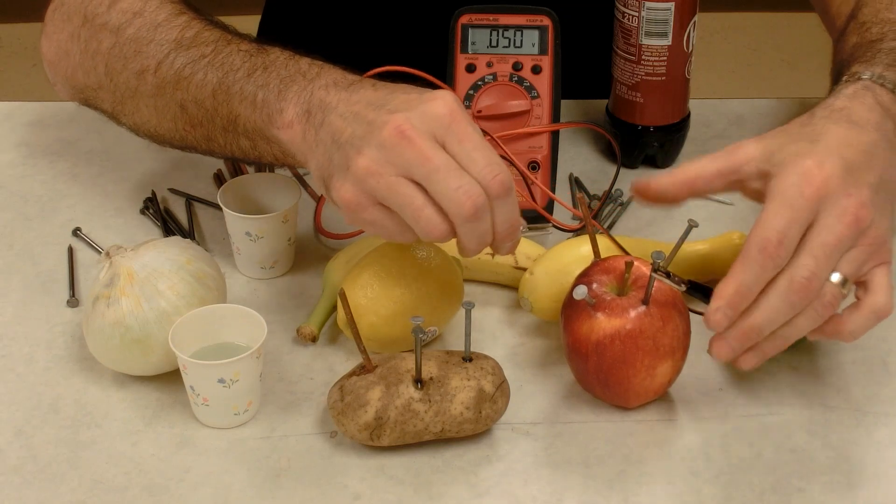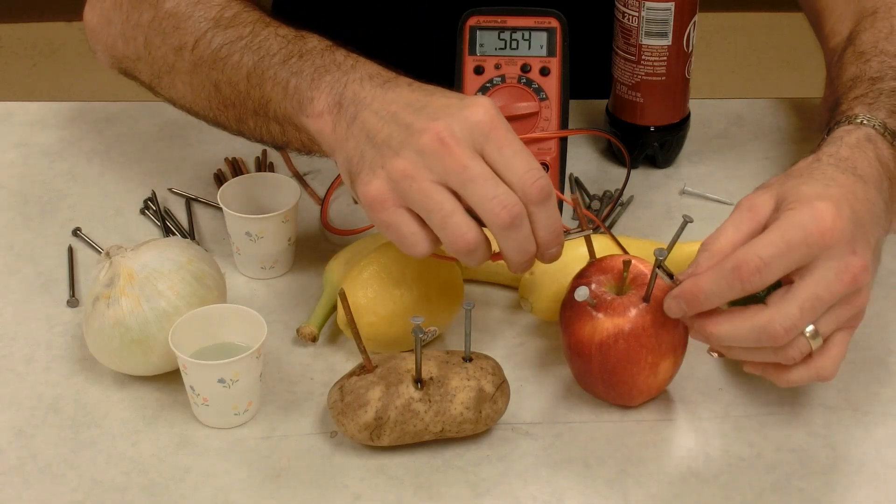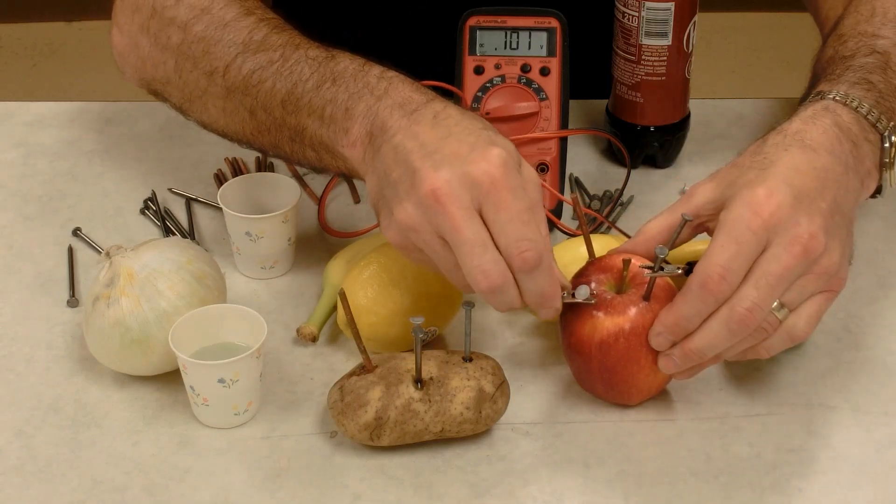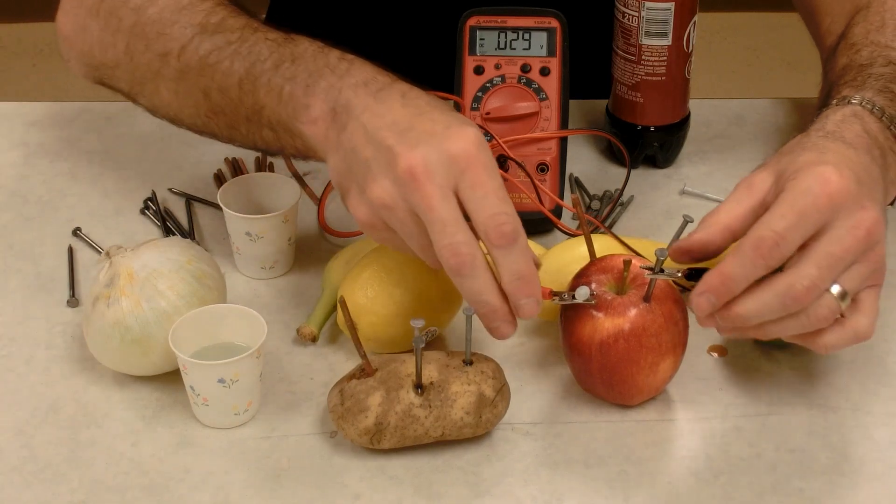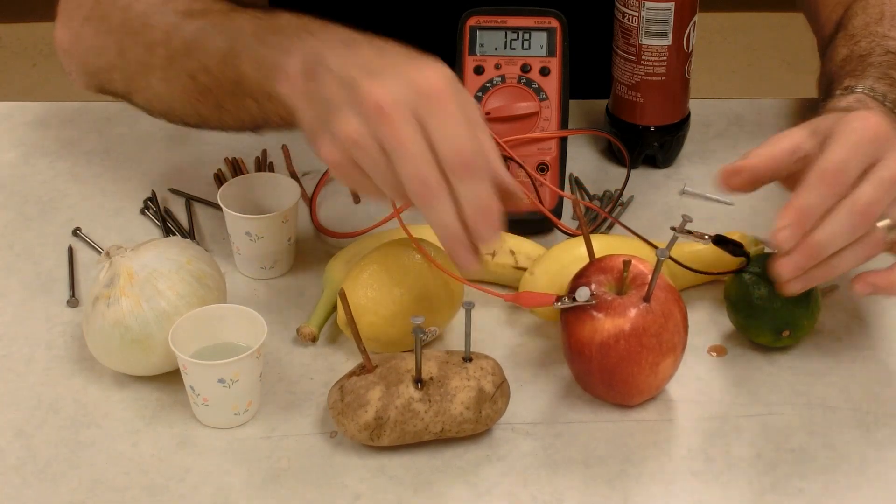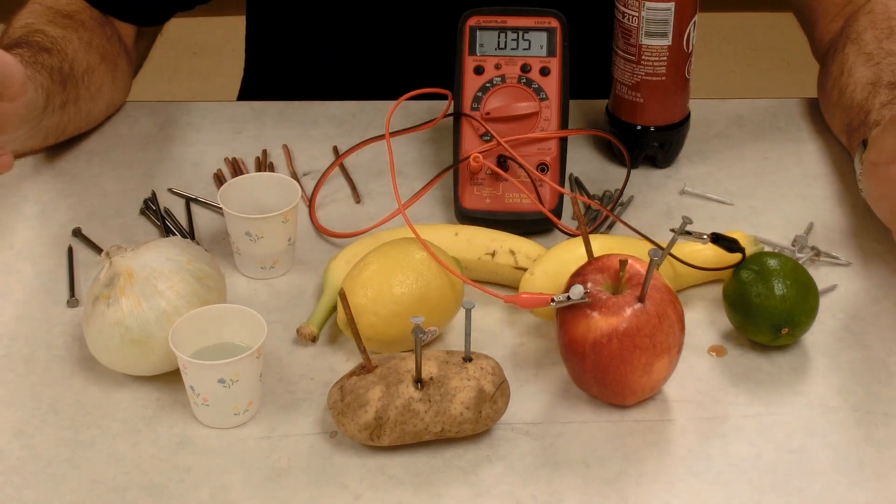Here is steel and copper, also about 0.56. We can try steel and aluminum, very little voltage, 0.03. Zinc and aluminum, very small amount of voltage, 0.02.